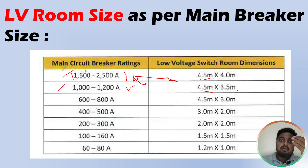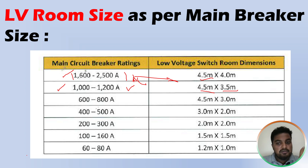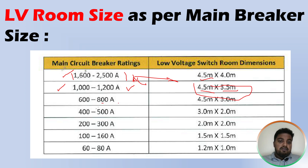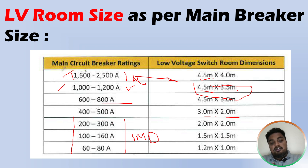These are minimum sizes — the actual size may change depending on your capacitor bank, ATS panel, SMDBs, and other items located in the LV room. For 800A ACB incoming, the room size is 4.5m × 3m. For 400A to 500A, it is 3m × 2m. For 200–300A, 100–160A, and 60–80A incoming MCCBs, these fall under smaller electrical rooms — typically 2m × 2m or 1.5m × 1.5m — which are found on typical floors. For 800A and above, the incoming device will be an ACB.